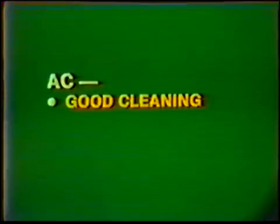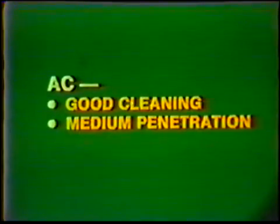Alternating current possesses good qualities of both direct current electrode positive and electrode negative when welding metals with a relatively thick oxide coating, such as aluminum or magnesium. During the electrode positive portion, the current breaks down the surface oxide of the base metal, while the electrode negative portion of AC produces medium penetration. Alternating current provides good cleaning action and medium penetration, which makes it ideal for aluminum and magnesium.